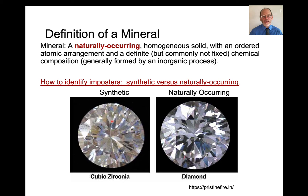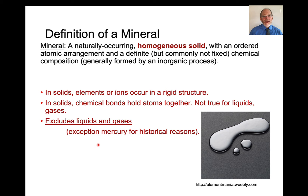First, naturally occurring. The most common example of something that is not a mineral are synthetic crystals. Here's an example — this is cubic zirconia, made synthetically. Here is a naturally occurring diamond. There are, of course, synthetic diamonds, but those are not considered minerals because they're created by people.